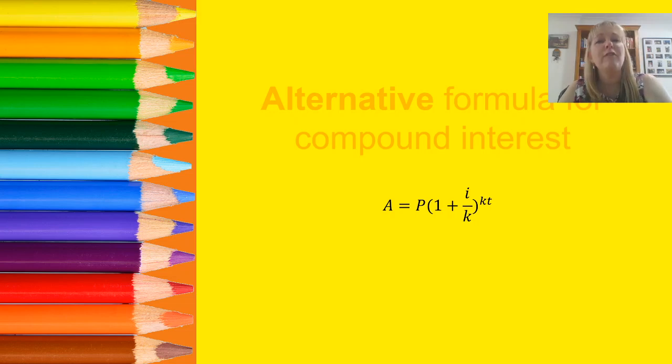There is an alternative formula that you could use for compound interest. Now you'd have to memorize this one because it's not given on the QCAA's formula sheet. The formula that I've modified, I've taken this from a textbook and instead of having i by itself, we've now got i divided by k and instead of the power of n we've got a power of kt. Let me unpack for you what that means.